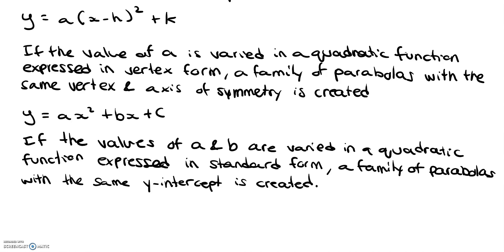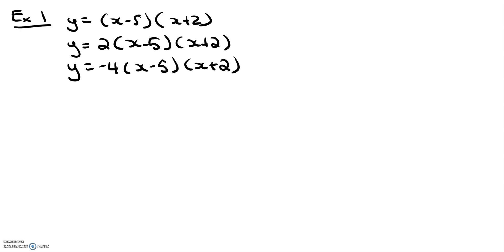Okay, so now let's go through some examples involving what we've just discussed. So in example one, let's say I have the equations: y equals x minus 5 times x plus 2, y equals 2 times x minus 5 times x plus 2, and y equals negative 4 times x minus 5 times x plus 2. Looking at this, I can see that these three quadratic functions are written in x-intercept form, and since I am varying the value of a here, I know that this family of quadratic functions has the same x-intercepts.